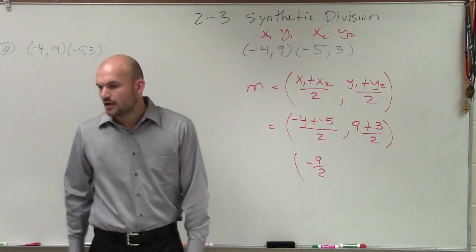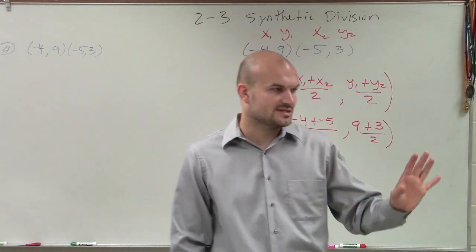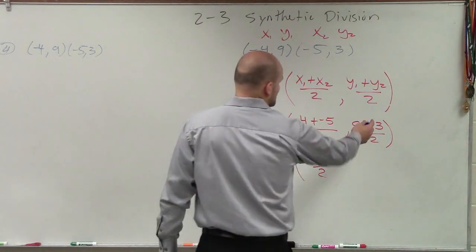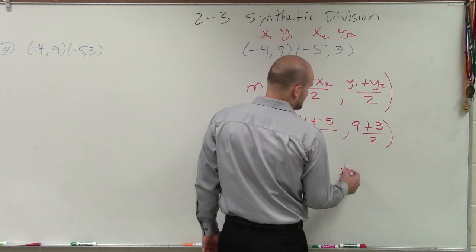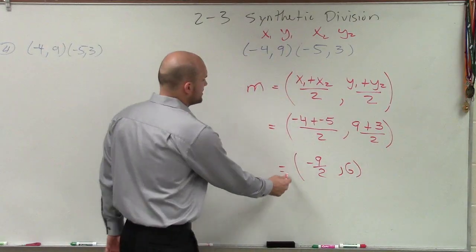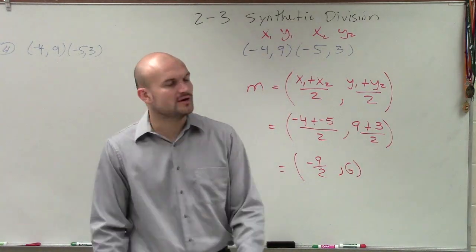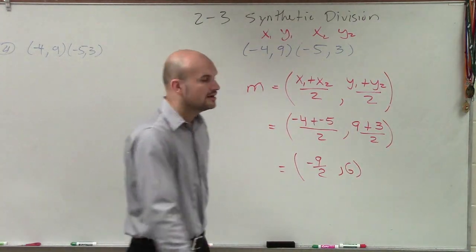So I don't want you converting that to a decimal negative 4.5, just leave it as a fraction. And then 9 plus 3 is 12, 12 divided by 2 is 6. So therefore, we have found out the midpoint of a point between those two points is negative 9 halves, comma 6.